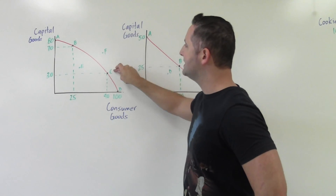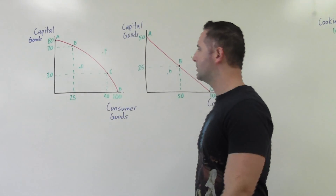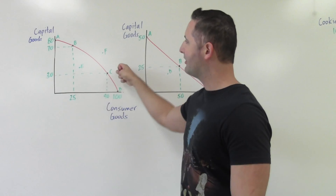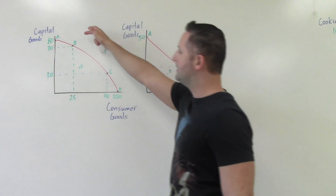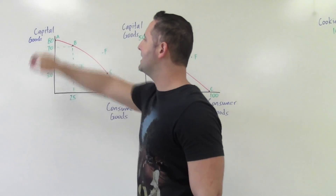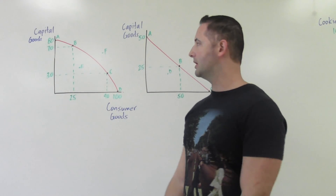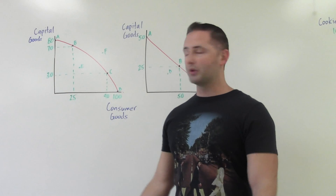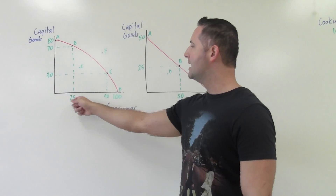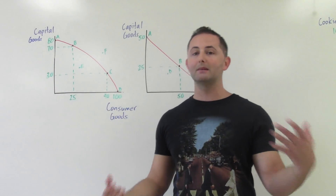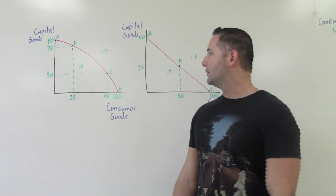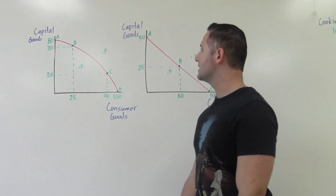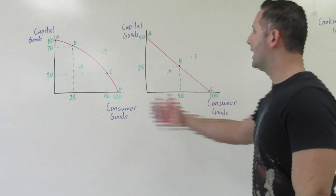We can calculate opportunity cost in any direction. Going from point C to point B, we start at 90 consumer goods and 30 capital goods. At point B we're down to 25 consumer goods but we gain 40 additional capital goods. The opportunity cost is what we're giving up — consumer goods — so 90 minus 25 equals 65. We're giving up 65 consumer goods, and that is our opportunity cost.